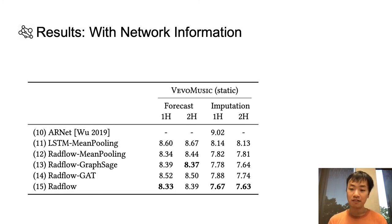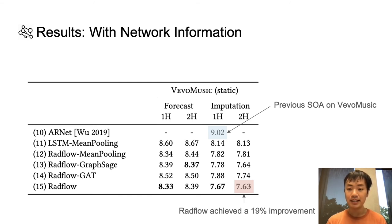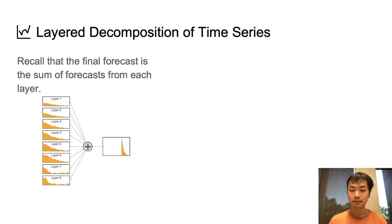Moving on to experiments with network information, the key result here is that on VevoMusic, we were able to achieve a SMAP score that is 19% better than the state-of-the-art ARNET model. In fact, even our RADflow model without network information from the previous slide was able to beat ARNET. This shows that sometimes having the right model outweighs having more information.